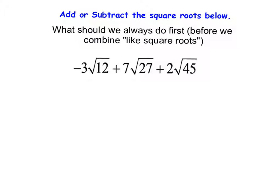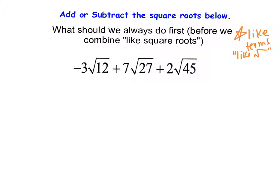So upon first look, we have negative three square roots of twelve, plus seven square roots of twenty-seven, plus two square roots of forty-five. Adding or subtracting square roots is a lot like combining like terms — we're looking for like square root parts. The problem here is that all three square roots are different. We always need to check whether these square roots are fully simplified. I notice that twelve, twenty-seven, and forty-five are not simplified, so before adding or subtracting, I'm going to simplify them one at a time. Starting with the coefficient of negative three and the square root of twelve.